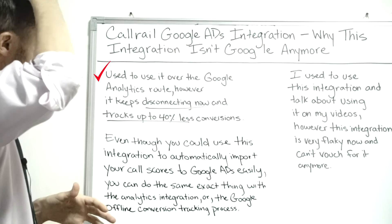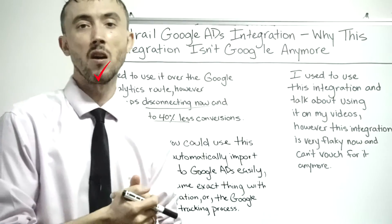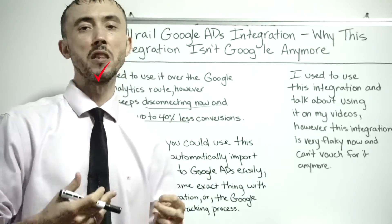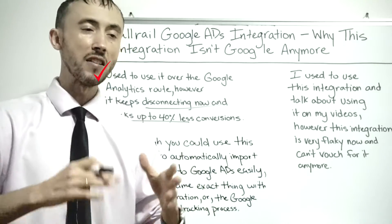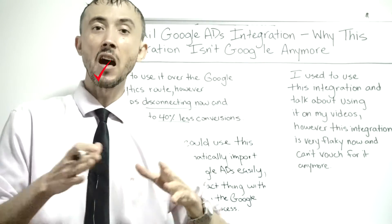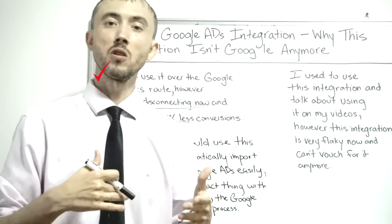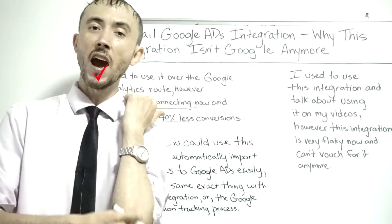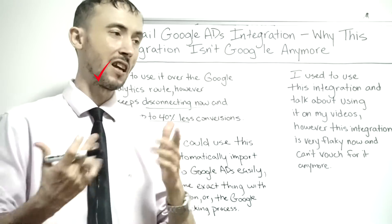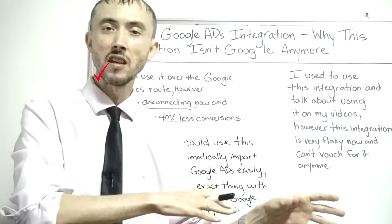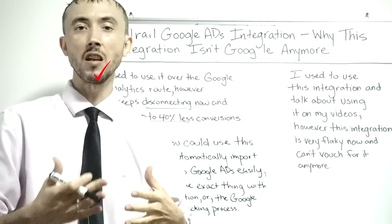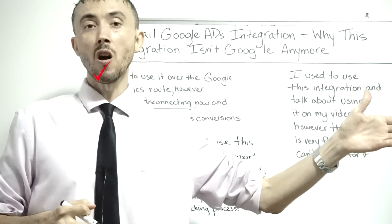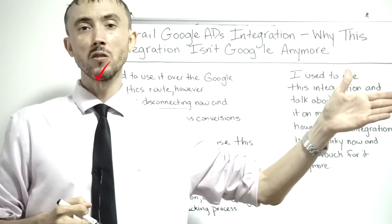The quality of data coming into your account ultimately dictates how many results you get. Google's ad-serving algorithm will get you more results with better data. So if your data tracking breaks, the algorithm gets confused. If it breaks long enough, you can totally lose all the results you've built up over months or years. Half the value of your ad spend is just the buildup of that conversion data that gets you the ultimate results you want.